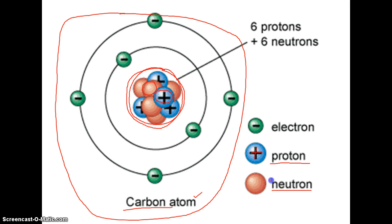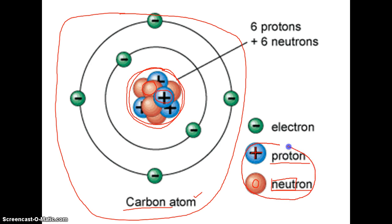Notice that the neutrons don't have any type of sign in the middle of them — that's because they have a neutral charge. If we were to put a sign in the middle of them I would recommend putting a zero, meaning they have zero charge. They are non-charged particles. So protons and neutrons exist together in the nucleus, the central portion of this atom.